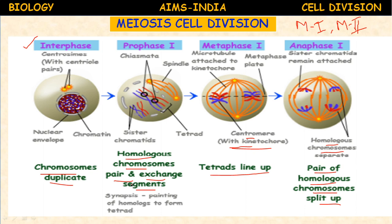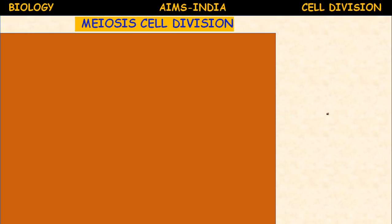In Metaphase I, arrangement of chromosomes at the equatorial plate occurs and maximum condensation of chromosomes takes place. In Anaphase I, movement of homologous chromosomes occurs without centromere breakage. In Telophase I, chromosomes elongate and the formation of two haploid cells takes place. A lot of importance is given to the meiosis cell division.